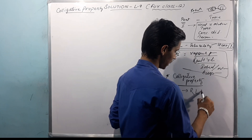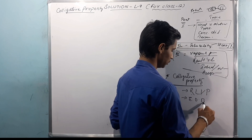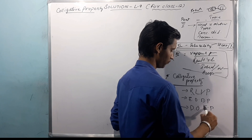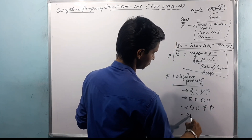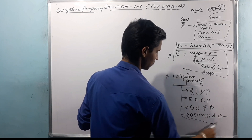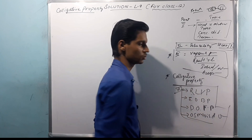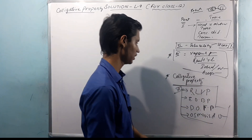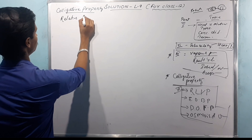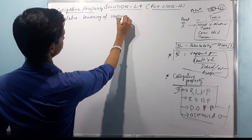The colligative properties are: Relative Lowering of Vapor Pressure, Elevation of Boiling Point, Depression of Freezing Point, and Osmosis and Osmotic Pressure. RLVP stands for Relative Lowering of Vapor Pressure. We need to be aware of these colligative properties.